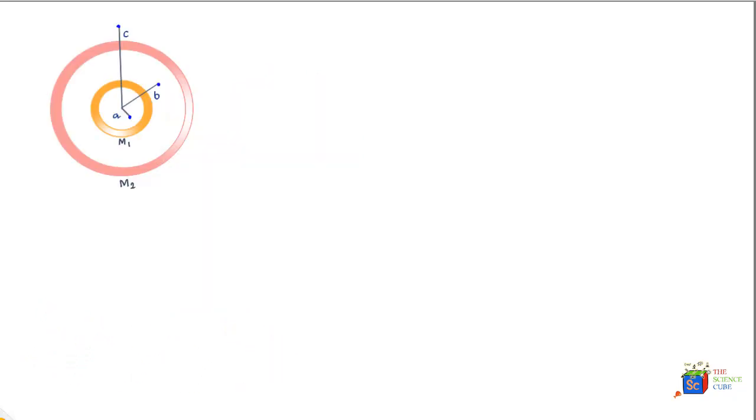What we have in this question are two shells, one of mass M1 and the outer one of mass M2. The question is: what is the force of gravity on you when you are at radius c from the center, then at radius b, and finally when you are at a